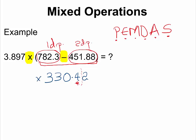We move on to multiplication. We multiply what we got by 3.897, and if you enter this into your calculator you should get 1287.64674.